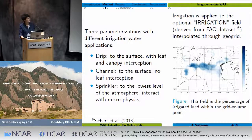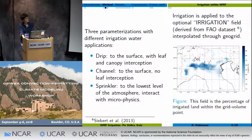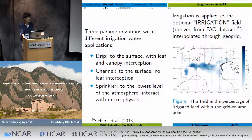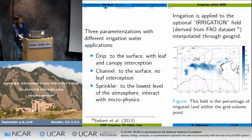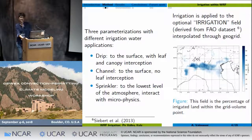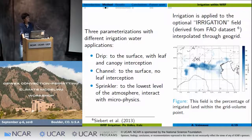Now let's go to the parametrization of irrigation. In this region, we have three methods: drip, channel, and sprinkler. The first two apply water to the surface — the drip has leaf interception, while the channel has no interaction with the canopy. The sprinkler injects water into the lowest level of the model. This irrigation is applied to an irrigation field provided in ungridded format, and you can see a zoom of the area with the irrigation percentage.